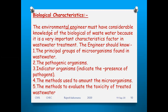The environmental engineer must keep in mind the knowledge of biological characteristics of wastewater as it is a very important factor in wastewater treatment. The engineer should know the principal groups: first, how to classify the microorganisms; second, what are the pathogenic organisms; third, the indicator organisms that indicate the presence of pathogens.